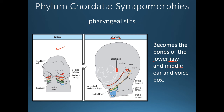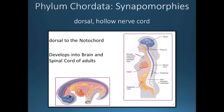The dorsal hollow nerve cord, shown here in bluish-purple in the embryo, extends the full length of the embryo and develops into the brain and spinal cord in adults. It is dorsal to — meaning toward the back of — the notochord. The notochord becomes the vertebral column, and the dorsal hollow nerve cord that becomes the spinal cord runs dorsal to it. Dorsal means toward the back; ventral means toward the front.